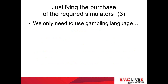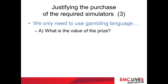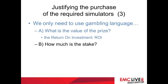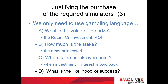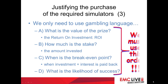We only need to use the language of gambling. What's the prize value — the winnings, potentially? That would be the return on investment. How much is the stake — how much do we have to invest? What's the break-even point? That's when the investment and the interest on it has been paid back — everything from then on is profit. What's the likelihood of success? You see, it's just money, time, and probability. We have to present these things in this order.